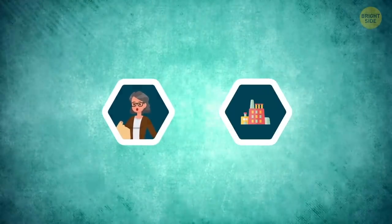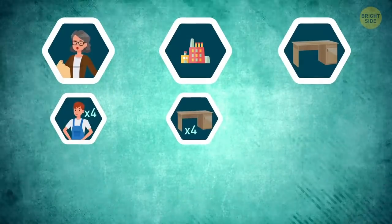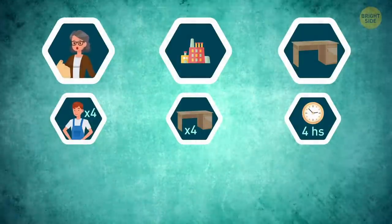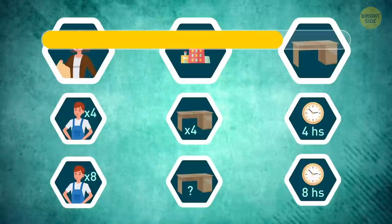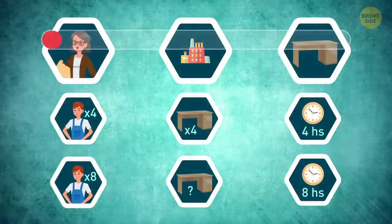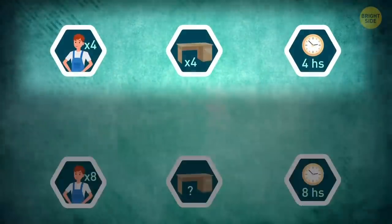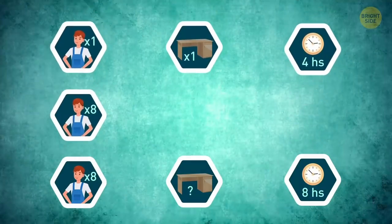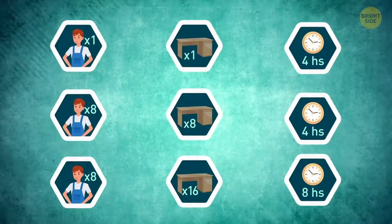Mrs. Marshall owns a factory that produces office desks. Four workers can build four desks in four hours. If she hires four more people, how many desks will eight workers produce in eight hours? If four workers produce four desks in four hours, it means that each worker produces one desk in four hours. So, eight workers will produce eight desks in four hours or 16 desks in eight hours.